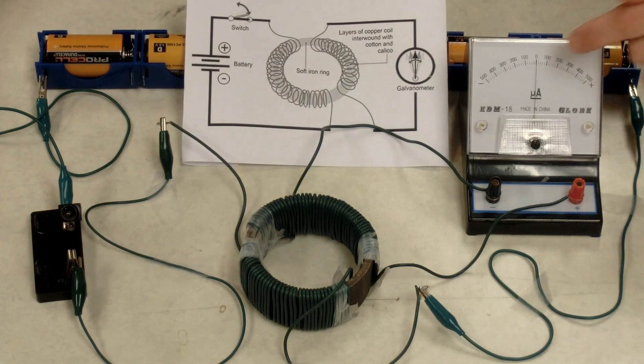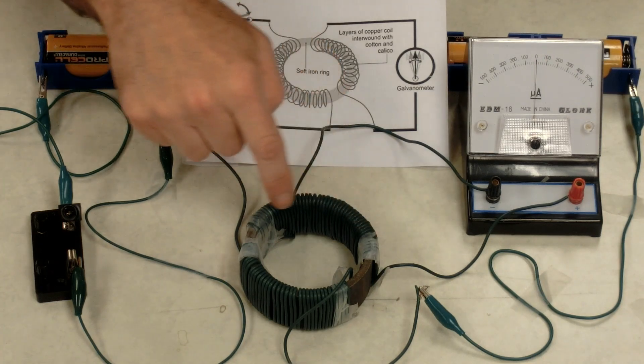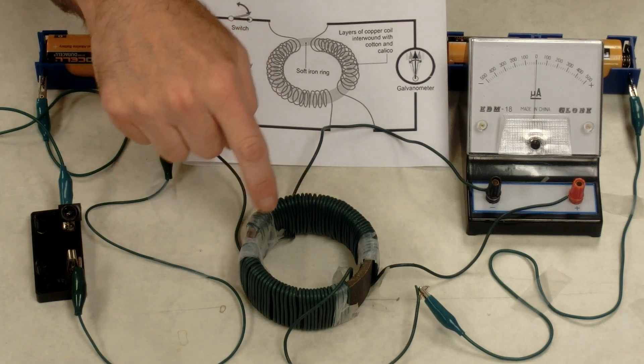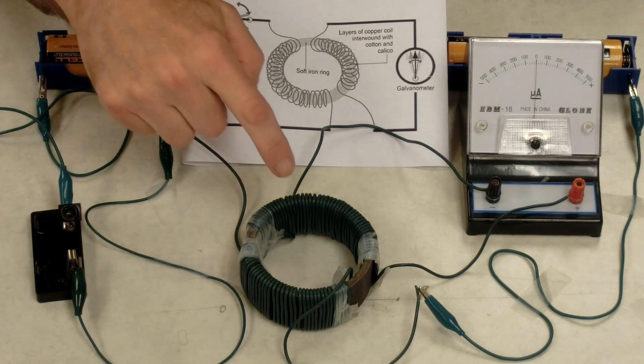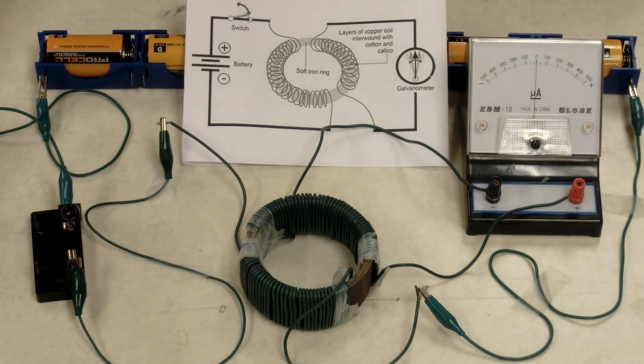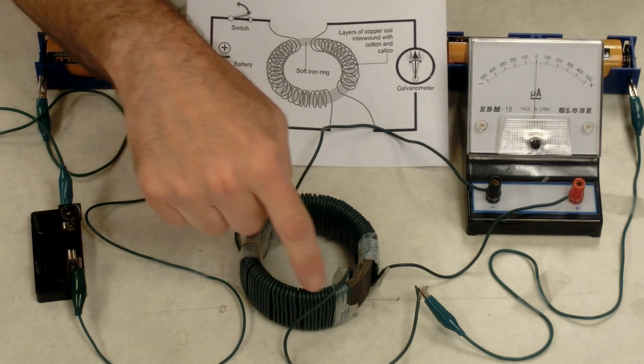What you'll notice is the needle is not moving. There is no current flowing through this wire. If we connected this wire to a battery and turned it on, we would expect that needle to move. But it's not connected to anything, so we really don't expect it to move. However, when I close the switch and run current through this other wire,